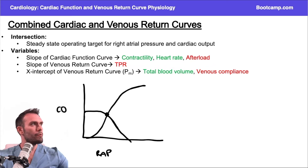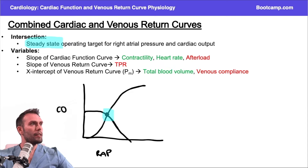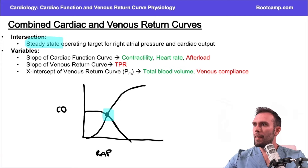That intersection point is the steady state, and it tells you what the patient's cardiac output is and what their right atrial pressure is. At this point, let's say the cardiac output is five and the right atrial pressure is about zero.